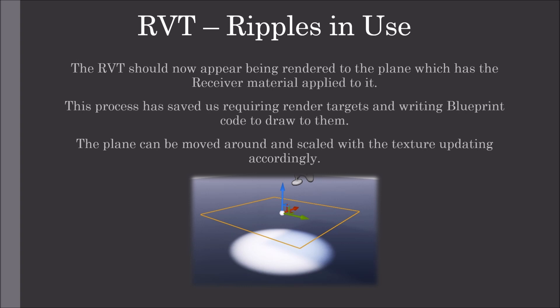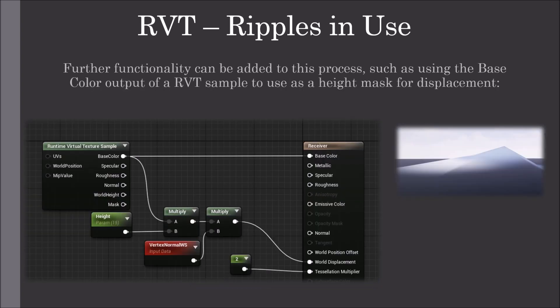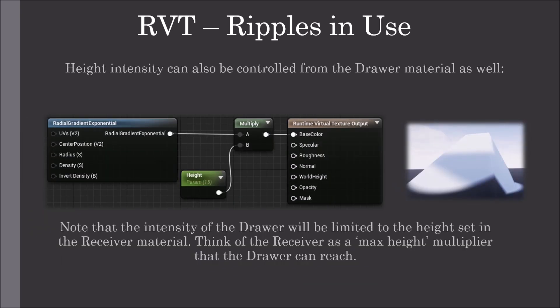This process has saved us from requiring render targets and writing Blueprint code to draw to them. The plane can be moved around and scaled with the texture updating accordingly. Further functionality can be added, such as using the base color output of a Runtime Virtual Texture sample as a height mask for displacement. Height intensity can also be controlled from the drawer material itself. Note that the intensity of the drawer material will be limited to the height set in the receiver material — think of the receiver as a max height multiplier that the drawer can reach.